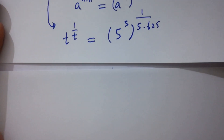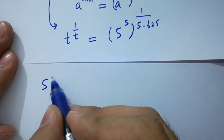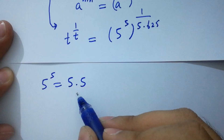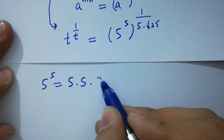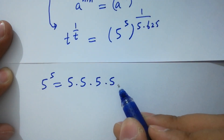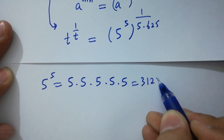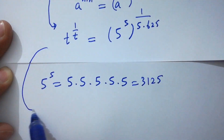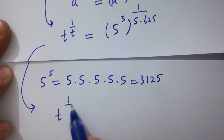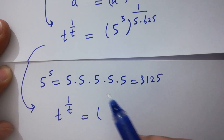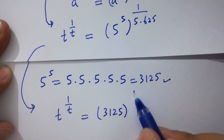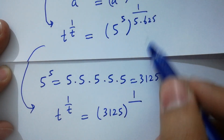Now, 5 to the power 5 equals 5 times 5 which is 25; 25 times 5 is 125; 125 times 5 is 625; and 625 times 5 is 3125. So it can be written as t to the power 1 over t equals 3125 to the whole power 1 over 5 times 625, and 5 times 625 is 3125.